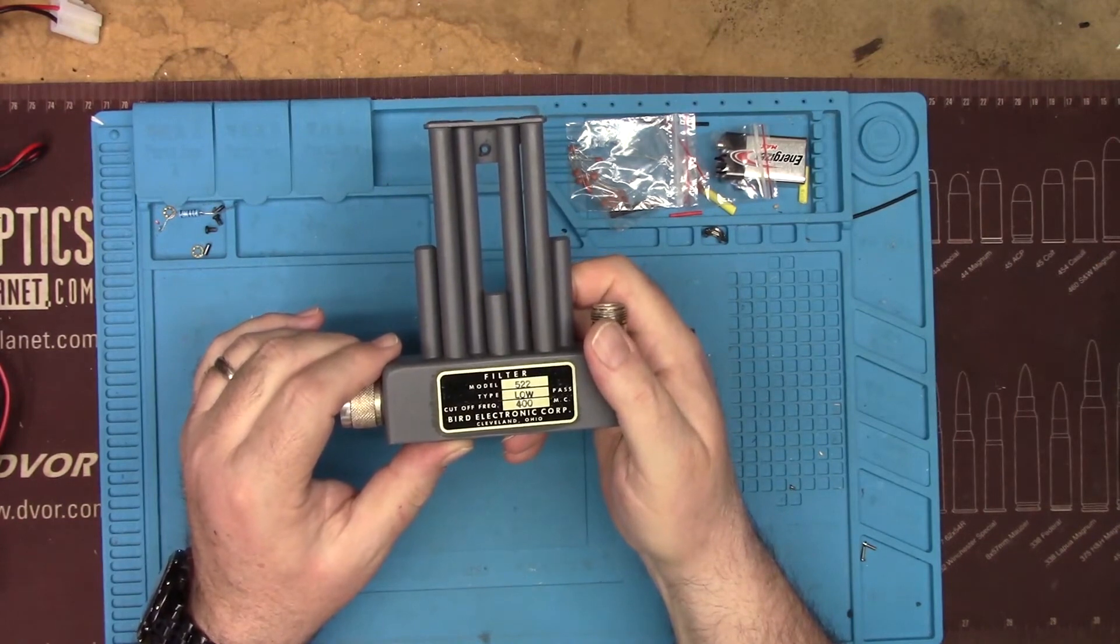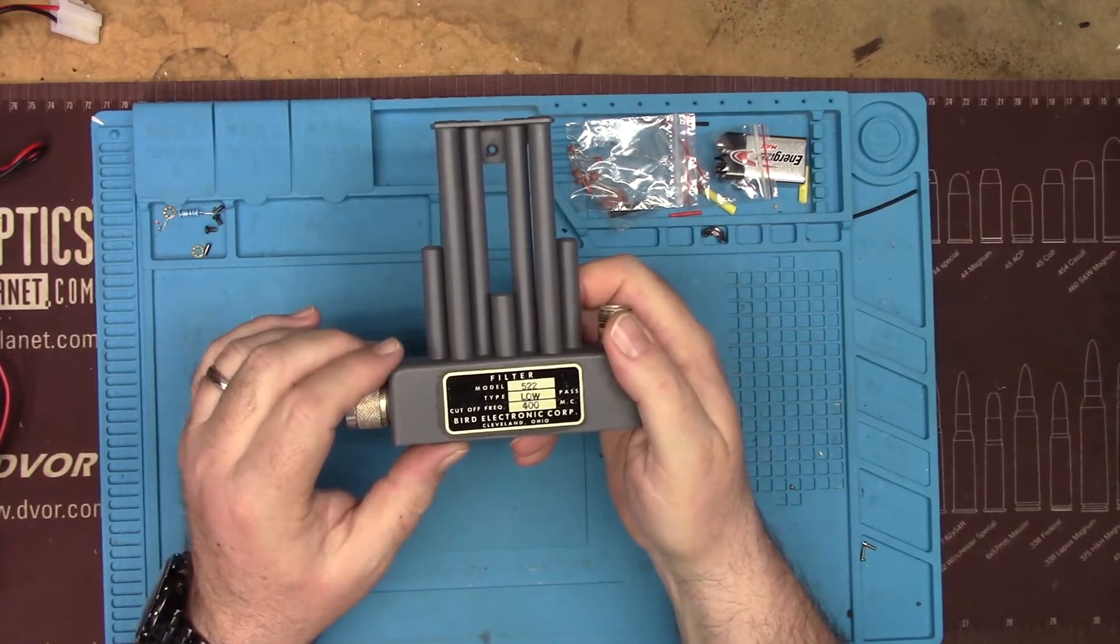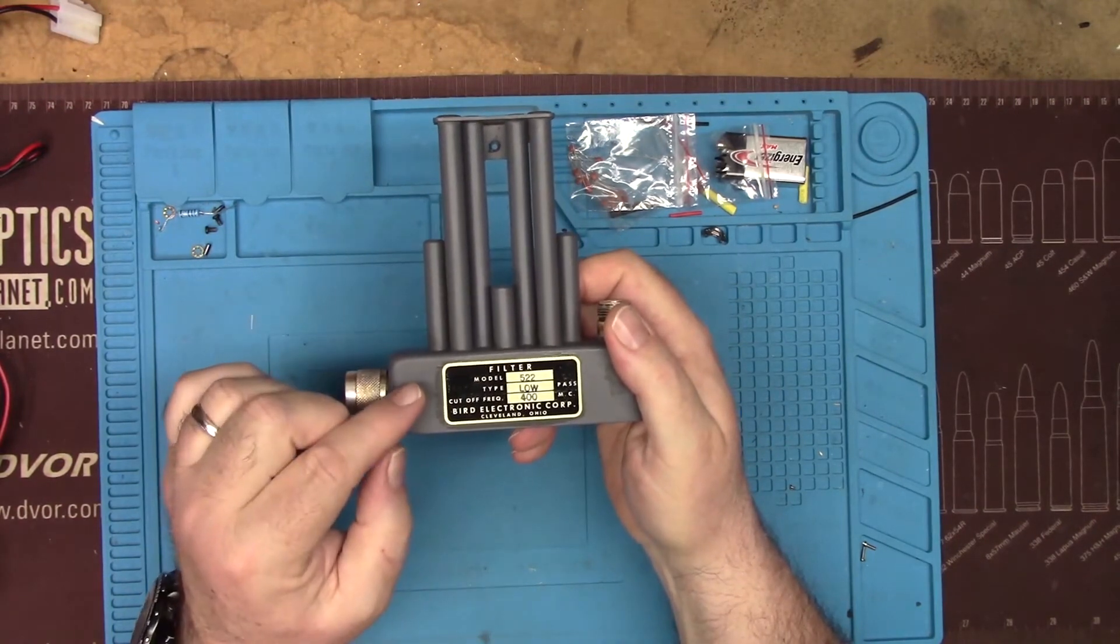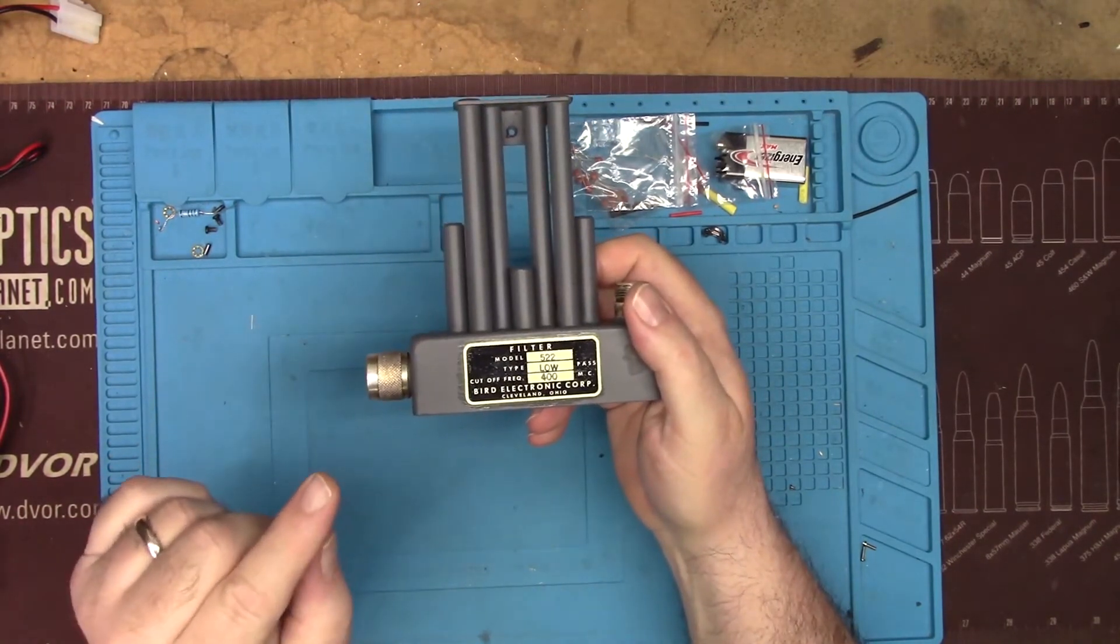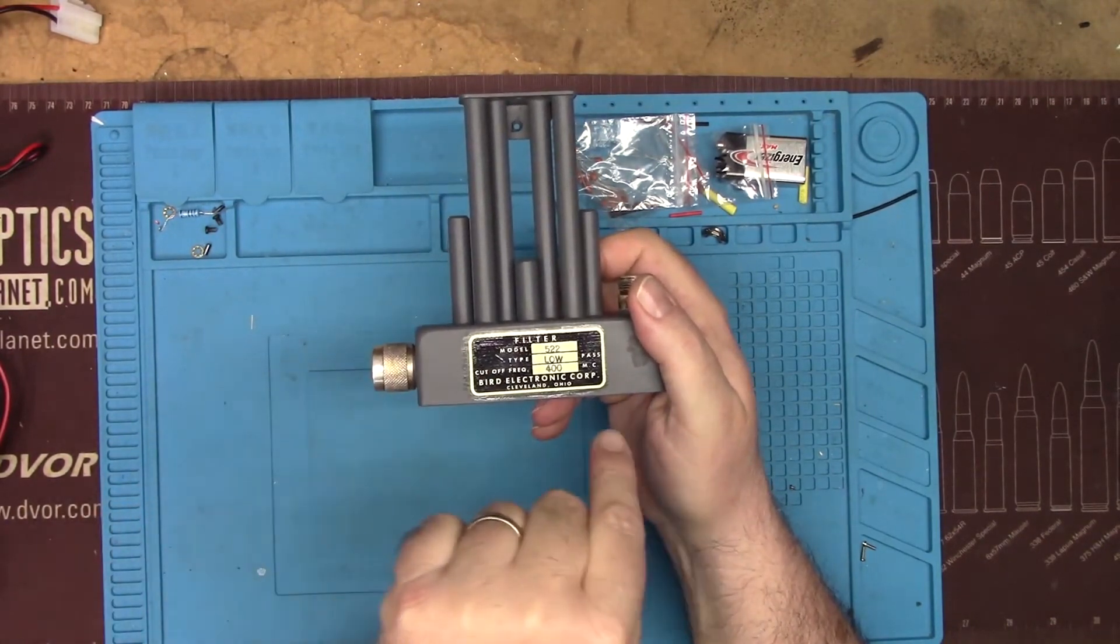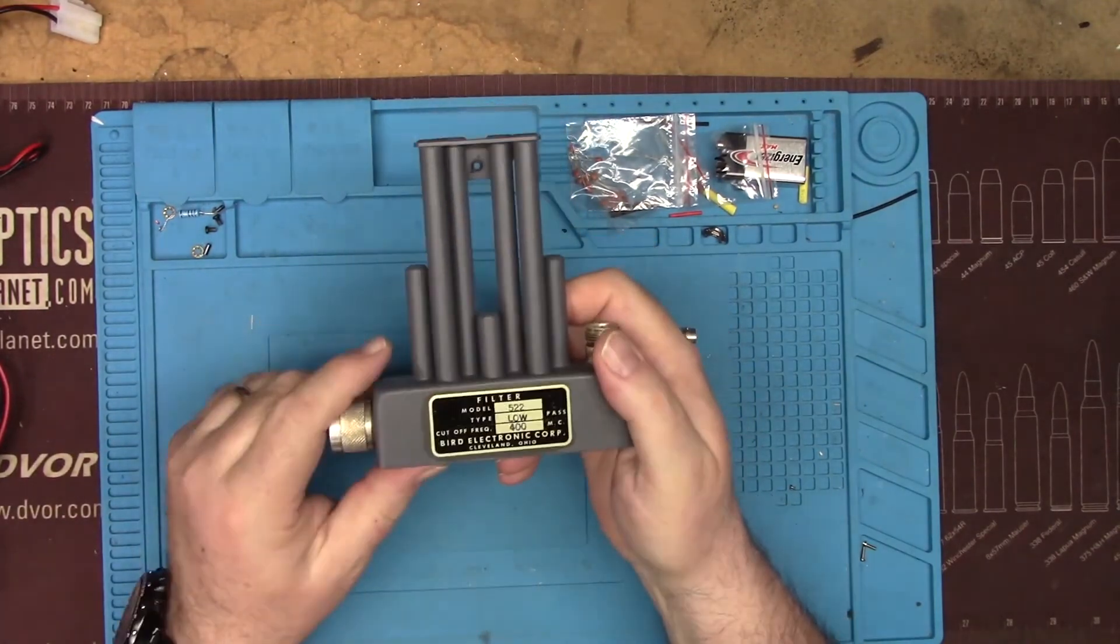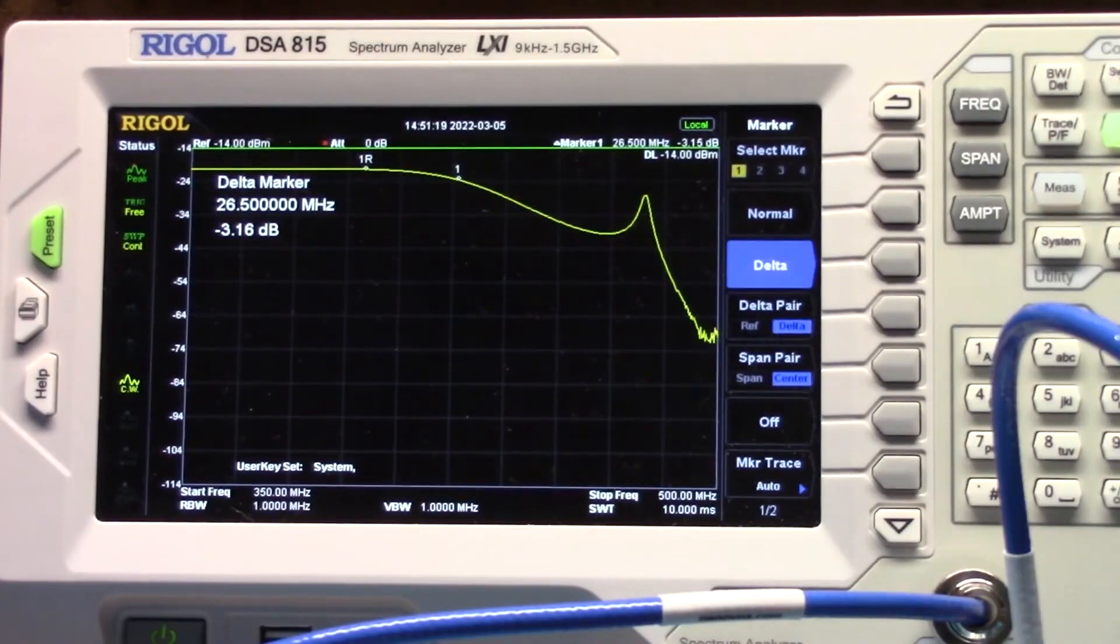So what we should see when we hook this up and take a look at it on the spectrum analyzer is you should see some sort of curve come across and then drop down. And the curve, of course, might be sharper than that. It depends on the way the filter's made internally.